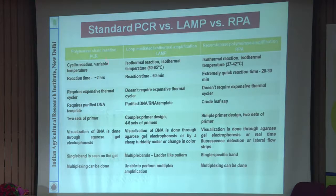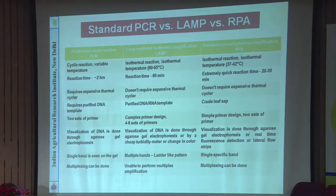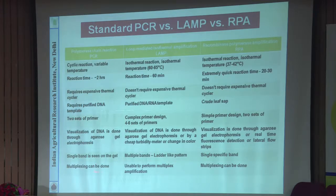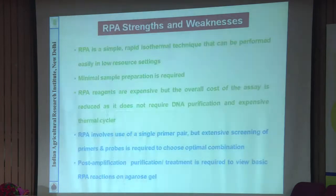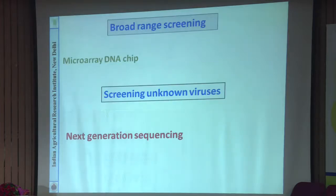Comparing conventional PCR, LAMP, and RPA: conventional PCR takes more than 2 hours, LAMP takes 60 minutes, and RPA takes 20-30 minutes. Conventional PCR requires an expensive thermal cycler; LAMP and RPA do not. LAMP requires 4-6 sets of primers; RPA requires only one pair with simple primer design. LAMP produces multiple bands; RPA produces a single specific band. Multiplexing is possible with RPA but has not yet been attempted, and not possible with LAMP.